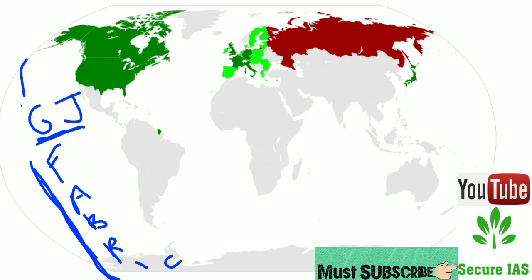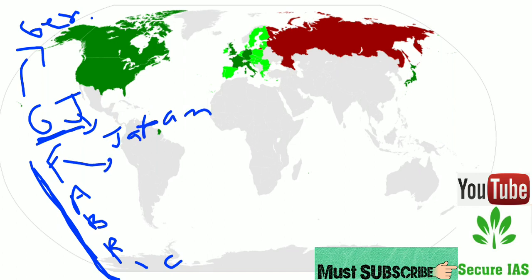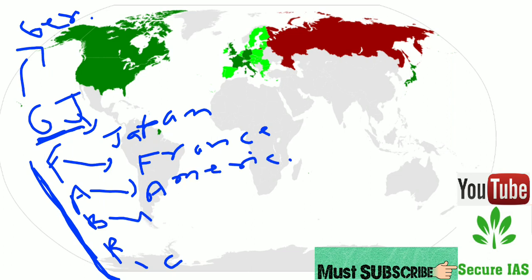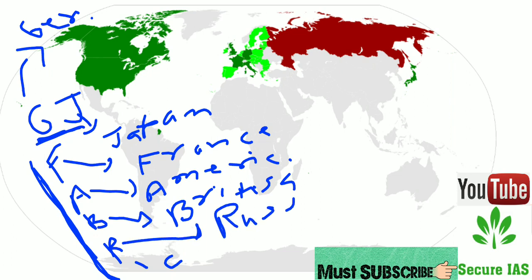These are the eight countries and each letter stands for a country. G stands for Germany, J stands for Japan, F stands for France, A stands for America, B stands for British, R stands for Russia, I stands for Italy, and C stands for Canada.